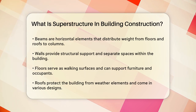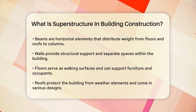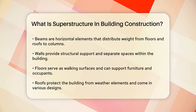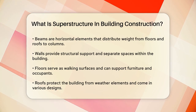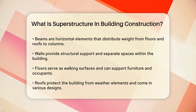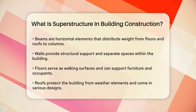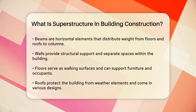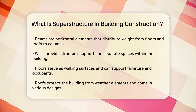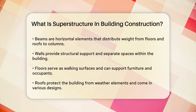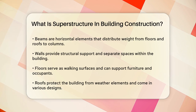Next, we have the beams. These are horizontal structural elements that support the weight of the floors and the roof. Beams transfer loads to the columns, which then pass these loads down to the substructure. They come in different materials like steel, concrete, or even wood.